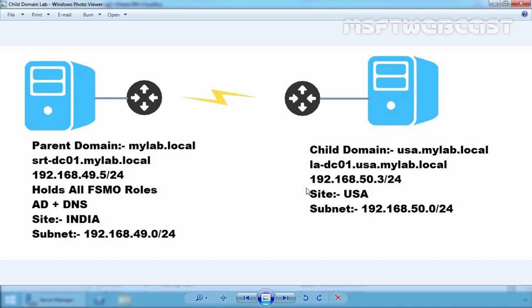You also need to prepare your current network for the new child domain. Before you begin with the new DC configuration, you need to perform certain tasks, like creating a new site in your Active Directory that will represent the physical structure of your network. In our example, our main office is in India and the new one is in USA. Based on that, we have to create a new site for our USA office. In addition to the new site, we also need to create a new subnet for our new location.